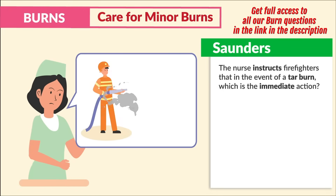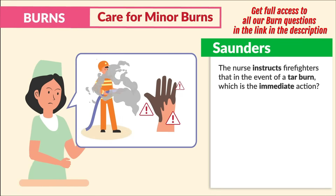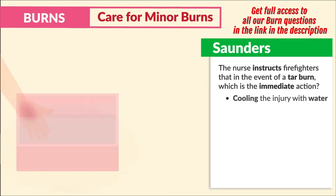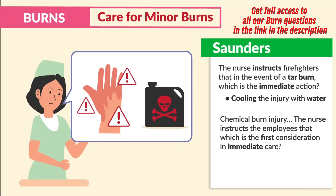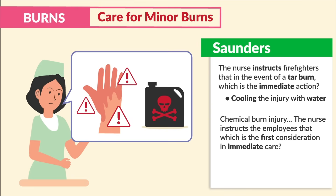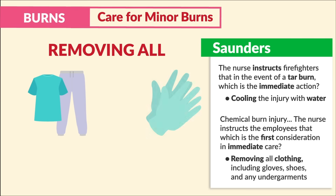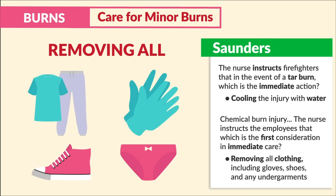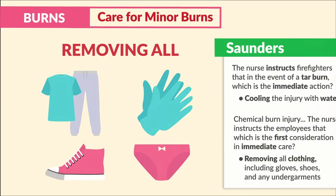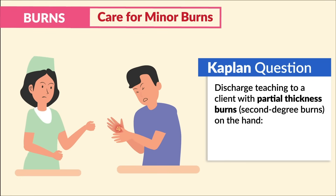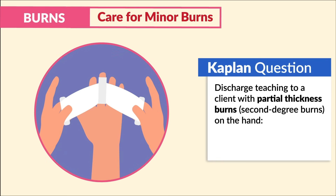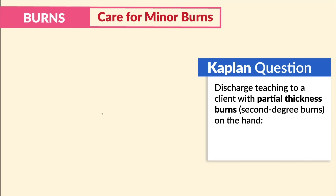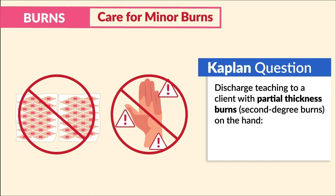Saunders mentions: for a tar burn, the immediate action is cooling the injury with water — that's our first C. For a chemical burn injury, the first consideration in immediate care is removing all clothing, gloves, shoes, and any undergarments. Kaplan mentions for discharge teaching with partial thickness burns on the hand, we wrap the fingers with individual dressings — this is done to prevent tissues from sticking together and causing further damage.